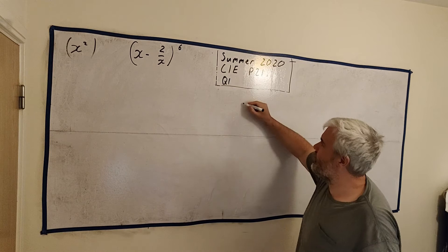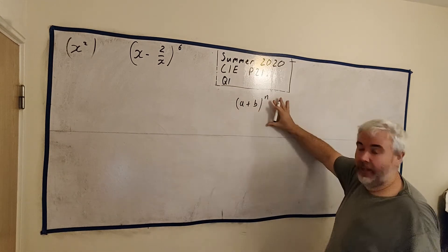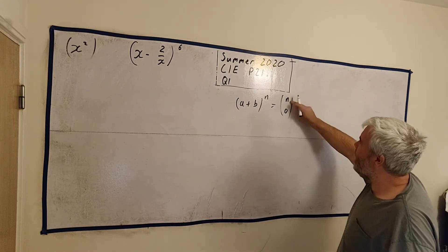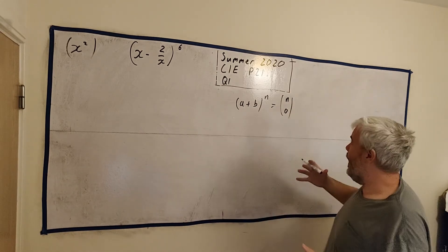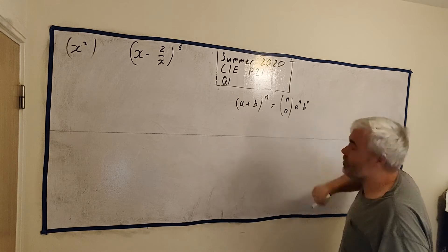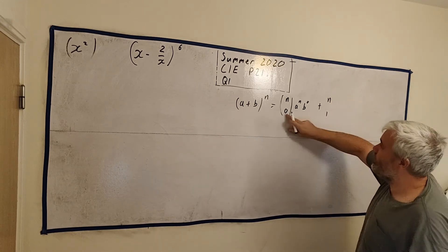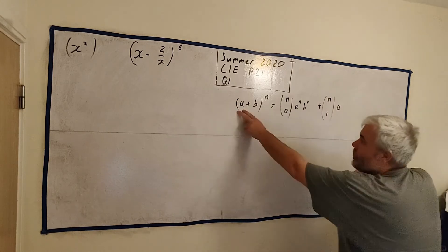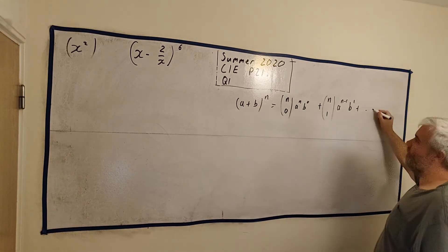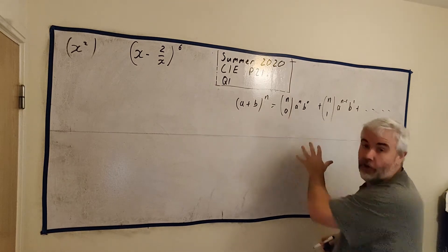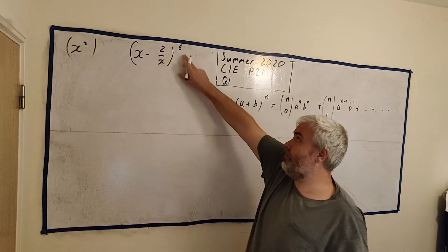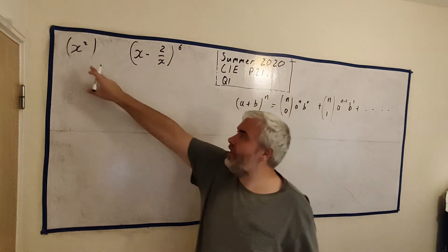We use the binomial expansion, which is when we have anything to the power of something. I'm not sure I'll get this off the top of my head, but n choose 0, so that's a complicated mathematical permutations and combinations. And it's the first term to the power of n, and the next term to the power of 0. The next one is n choose 1, and this goes up to 1. The first term to the power of 1 less, and the next term to the power of 1 more. And it continues on like this, and that way we can actually find every term in a binomial expansion.